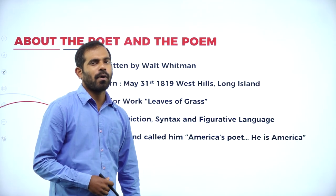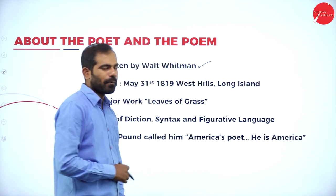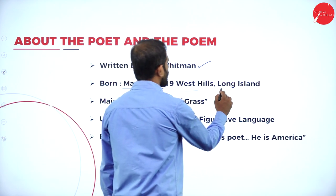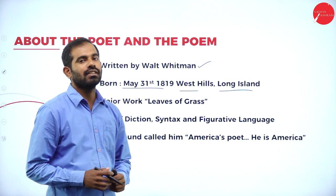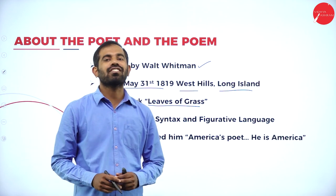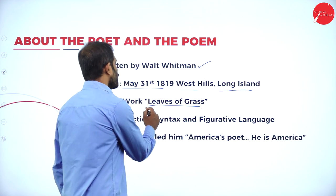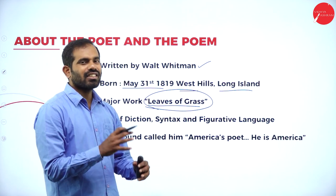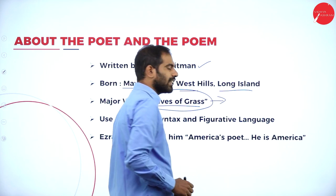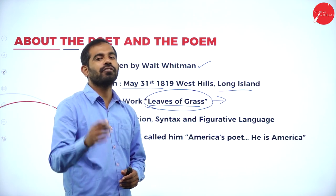Let us know something about the poet and the poem. Walt Whitman is an American poet. He was born on May 31st, 1819 in West Hills, Long Island, New York. His major work was 'Leaves of Grass,' one of the major collective poems, which gave a lot of readership to Walt Whitman. It is a bit complicated poetry collection, and people believe that this work gained him a lot of fame. Walt Whitman published this work out of his own money.